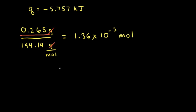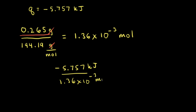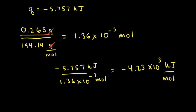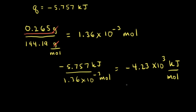Now all we have to do is divide our heat, negative 5.757 kilojoules, by our moles, 1.36 times 10 to the negative third moles, to give us a final value of negative 4.23 times 10 to the third kilojoules per mole, with the negative sign meaning heat is given off. So this is the change in the internal energy for our reaction in kilojoules per mole.